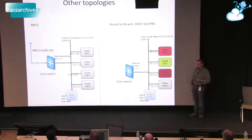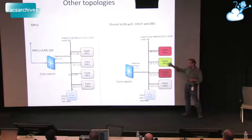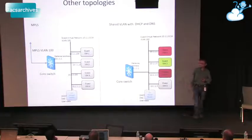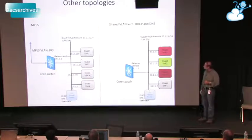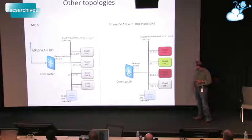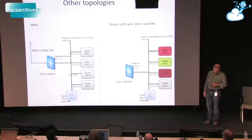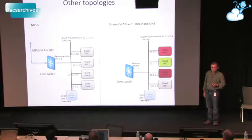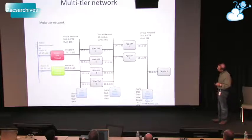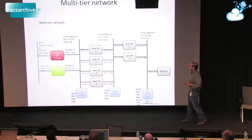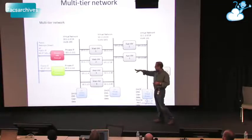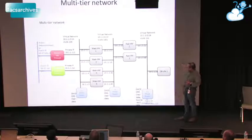Shared VLANs are popular in the enterprise — you can say 'this is where the web VMs are, if you ever want to start a web VM you've got to start it on this VLAN.' The different colors represent different tenants. You can also do a multi-tier network — the classic web, app, and DB topology.